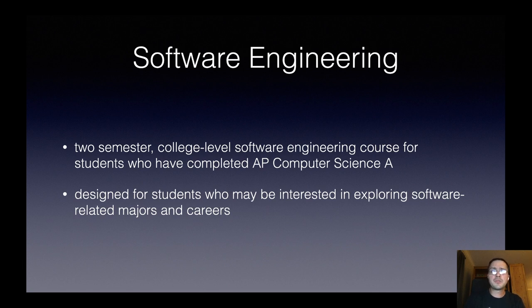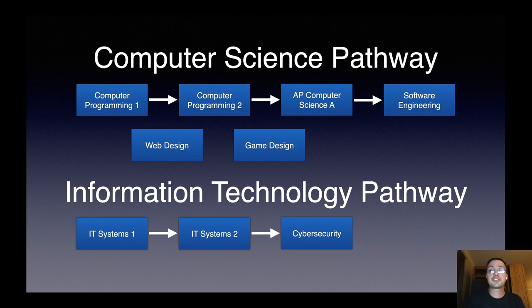Software engineering is a somewhat unique two-semester college level course for students who have already successfully completed AP Computer Science A. It is designed for students who may be interested in exploring software related majors and careers. We are very fortunate to have a robust computer science pathway as well as a robust IT pathway. The software engineering course is the capstone of our computer science pathway. We also have electives — web design and game design. The IT pathway, newly revised, starts with IT Systems 1 and 2, and is followed by the cyber security capstone class.